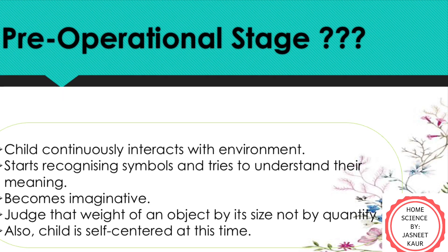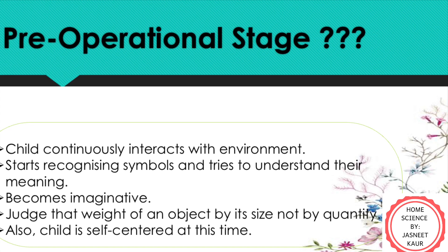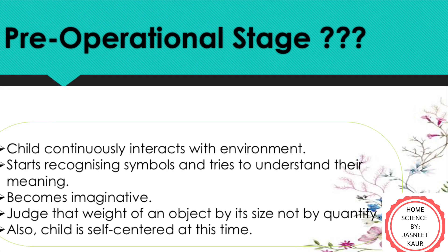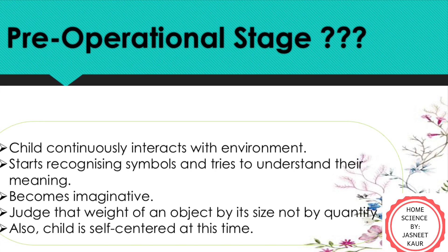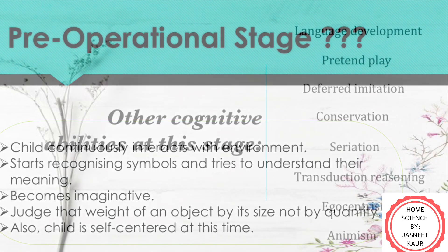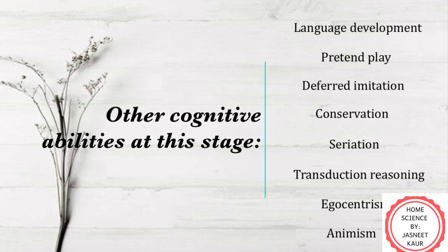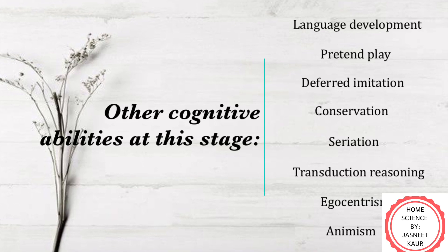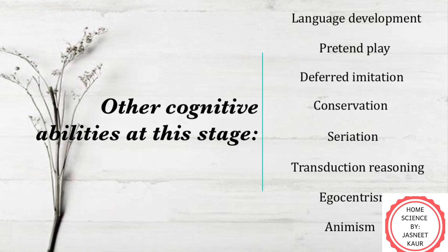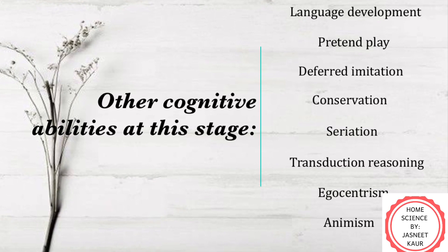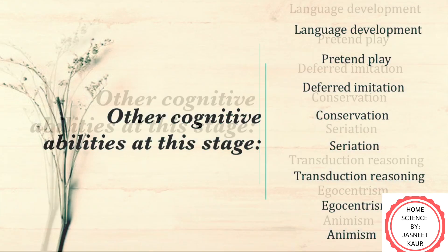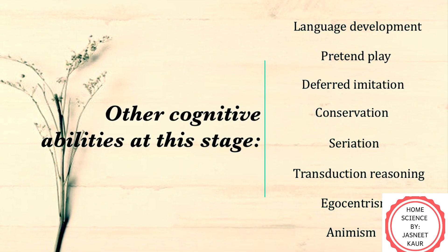Unlike Object Permanence in the first stage, egocentrism is an important term along with others which we will understand in this video. For that, stay tuned till the end.